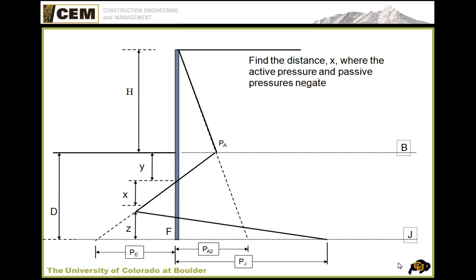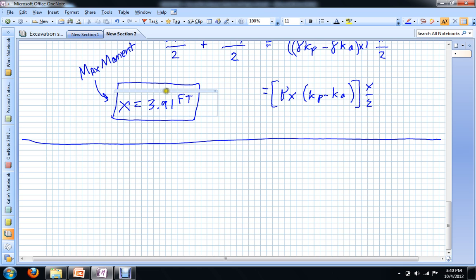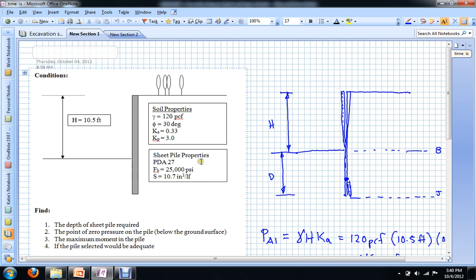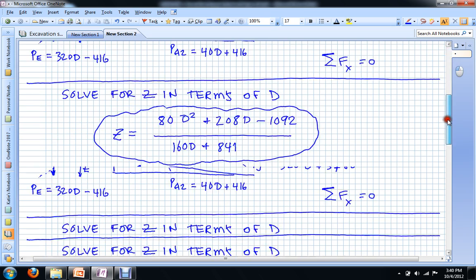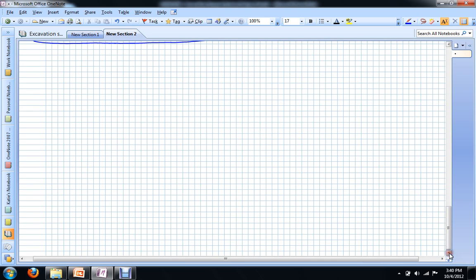So our last step in this problem — in the whole process — is to compute the maximum moment and then compare that to the capacity of the pile given in our problem. Going back to our original problem statement, we can see on the left-hand side the sheet pile properties: bending strength and section modulus. We need to use that information to compare whether or not our pile will be able to withstand the maximum moment. From our last video, we computed X = 3.9 feet.